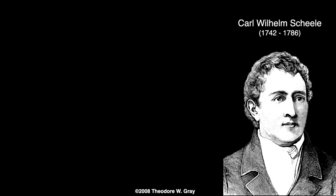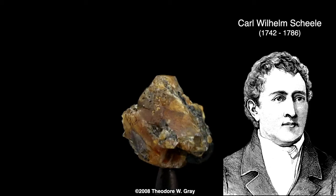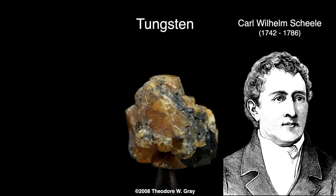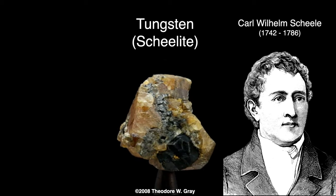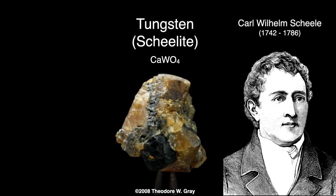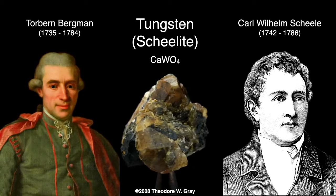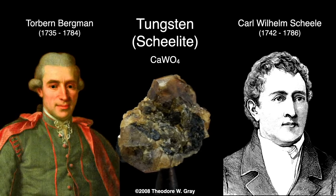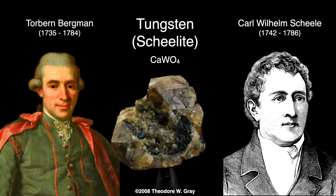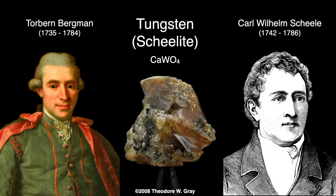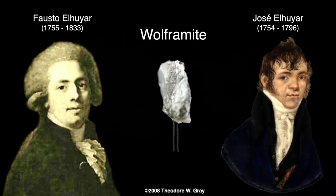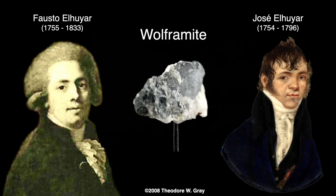In 1871, Carl Scheele discovered a new acid could be made from a mineral called tungsten, now named after him and called Scheeleite. Scheeleite is calcium tungstate. Scheele and Tobin Bergman believed they could extract a new metal by reducing this acid. They never accomplished this goal. Two years later, in 1873,